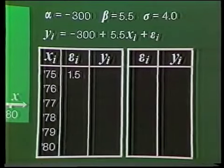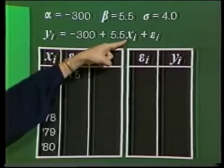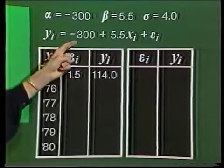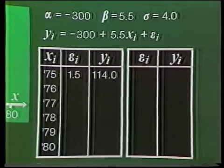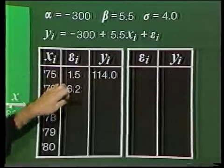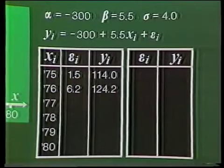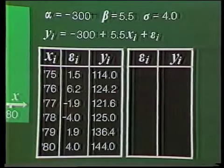So to get our simulated value for 1975, we add this value of epsilon 1 to alpha, that's minus 300, plus beta times x1, which gives 114.0. The units here are thousands, so that gives us our first point, 114,000 divorces. Our second simulated value is y2 equals alpha plus beta times x2 plus epsilon 2. Alpha plus beta x2 is 118, and we get epsilon 2 from the second random number. It's 1.5510 times 4 or 6.2. So the simulated number of divorces for 1976 is 124,200. And here are simulated divorce statistics for the other four years, done in the same way, giving us this set of six points.